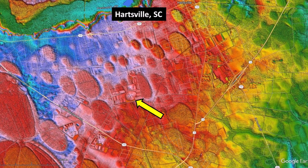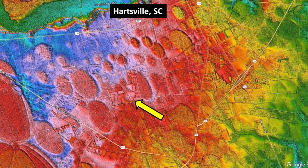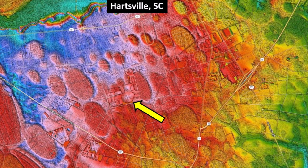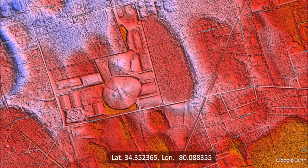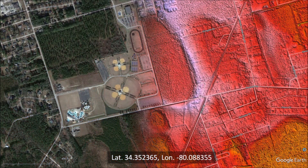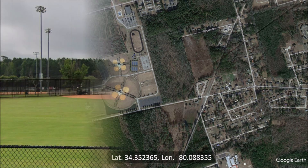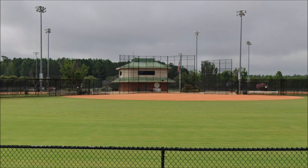Going back to the LiDAR image, we can see an interesting feature that looks like a cross on a hill. The satellite view of the same area shows that the cross is made of four adjacent baseball fields. Notice that the infield is slightly elevated, and this is why it appears as a hill on the LiDAR image.